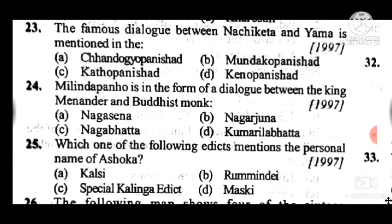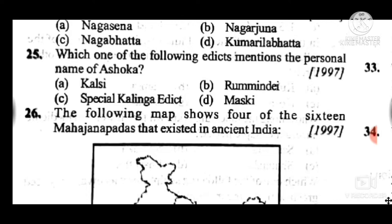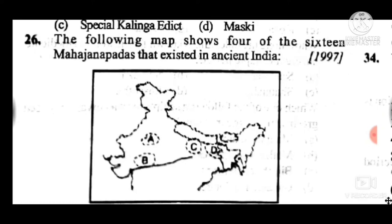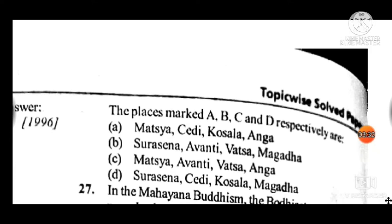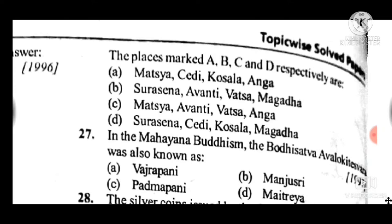Question 26 is a map-based question. You have to identify regions A, B, C on the map and determine which ancient Janapadas they belong to. The answer is C — Matsya, Avanti, Vatsa, and Anga.